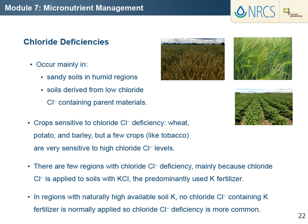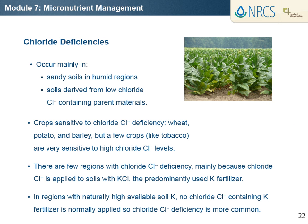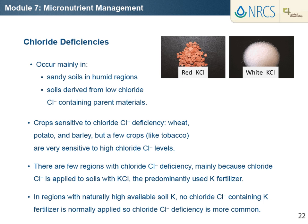Crops sensitive to chloride deficiency include wheat, potato, and barley, but a few crops, tobacco for example, are very sensitive to high chloride levels. There are few regions with chloride deficiency, mainly because chloride is applied to soils with potassium chloride, the predominantly used potassium fertilizer. However, in regions with naturally high available soil potassium, no chloride containing potassium fertilizer is normally applied, so chloride deficiency is more common.